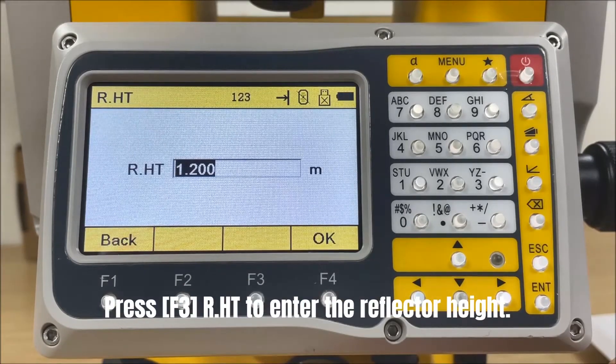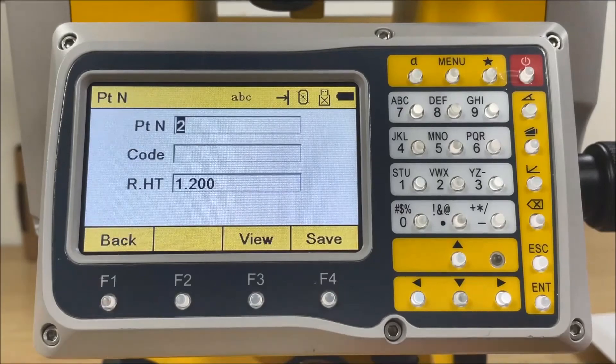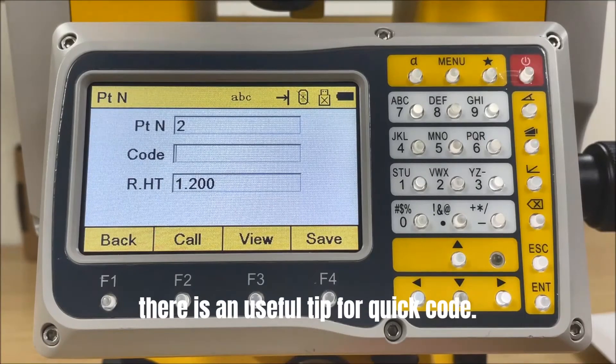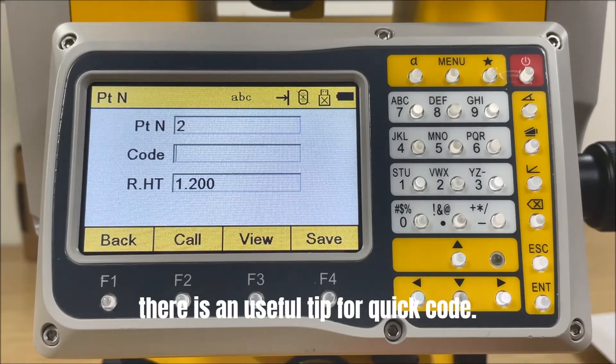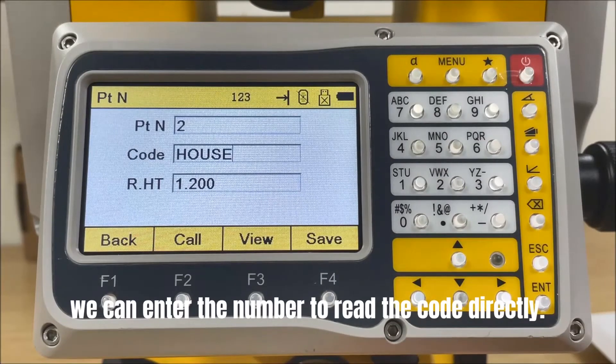Press F3 to enter the reflector height. When we save the measurement into record, there is a useful tip for quick code. When quick code is activated, we can enter the number to read the code directly.